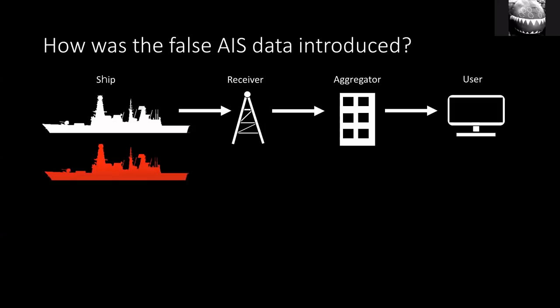The most obvious attack vector is that the ship in question could have knowingly broadcast false data. Alternatively, another ship may be faking being the first ship. But you don't even need a ship — you could just have radio equipment and transmit your position from your car, for example. The receiver picks it up and processes whatever latitude and longitude you've declared.